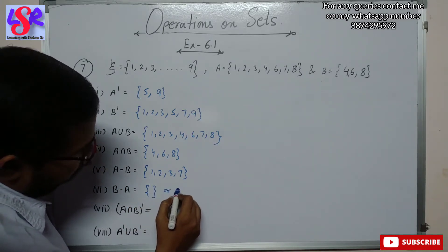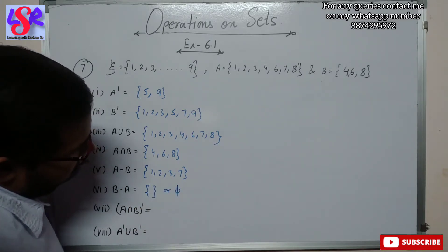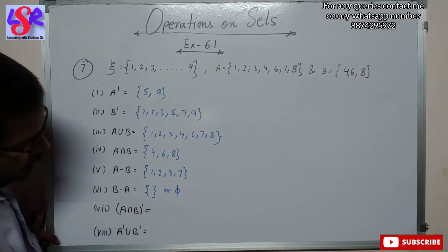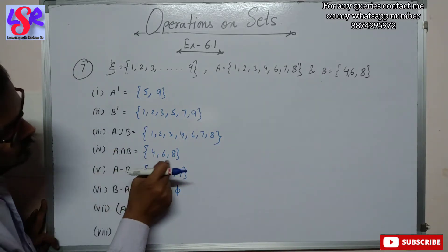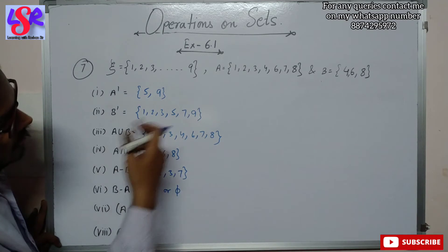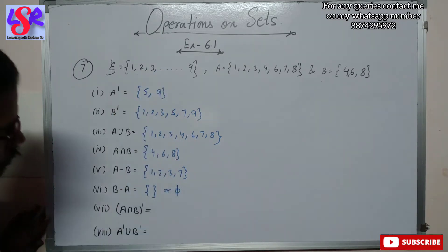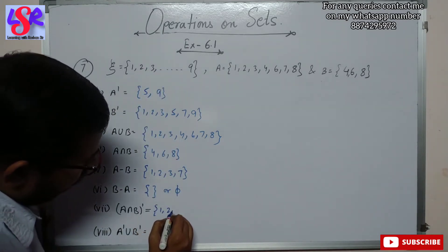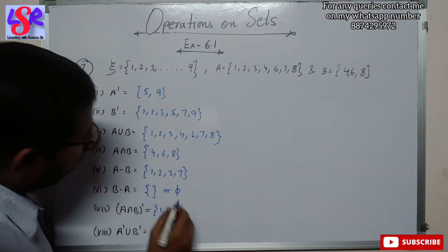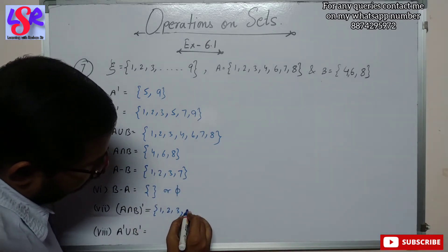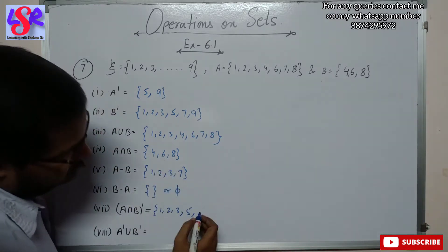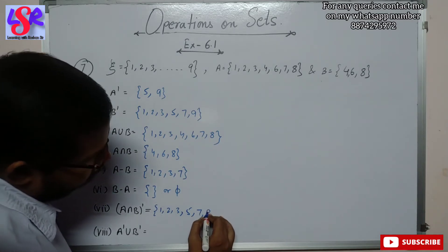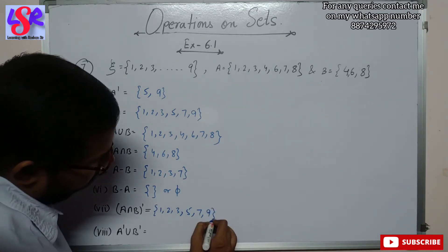We can write the empty set symbol. Then we have to find A intersection B complement — meaning the numbers in the universal set other than those in A intersection B. So we write 1, 2, 3 — 4 is there so we skip — 5, 7 — 6 is there — and 9 — 8 is also there.